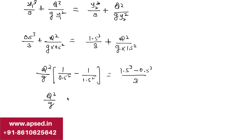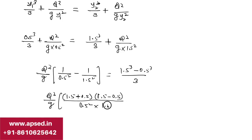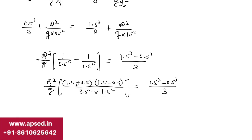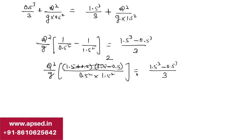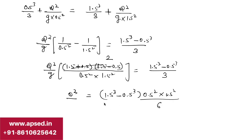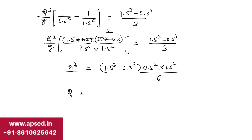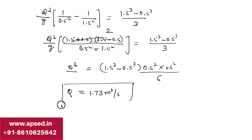Simplifying further: Q²/g × (1.5² − 0.5²)/(0.5² × 1.5²) = [(1.5)³ − (0.5)³]/3, using the identity a² − b² = (a+b)(a−b). The numerator on the left becomes 2, and with g = 9.81, we solve: Q² = [(1.5)³ − (0.5)³] × (0.5)² × (1.5)² / (3 × 2). Using a calculator, Q = 1.73 m³/s.